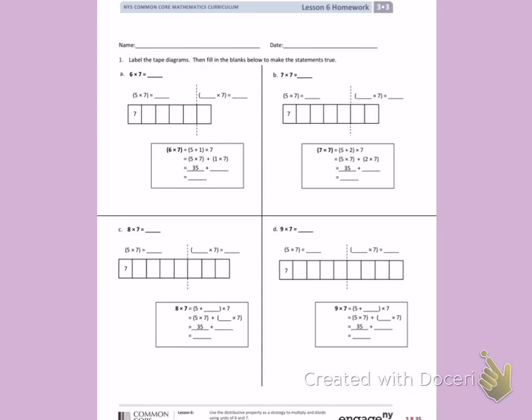This is Module 3, Lesson 6, Homework, Side 1. Today's objective was to use the distributive property as a strategy to multiply and divide using units of 6 and 7. Number 1: Label the tape diagrams, then fill in the blanks below to make the statements true.